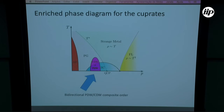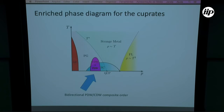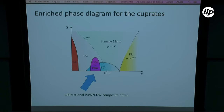The phase diagram of the cuprates became enriched — it gained a new phase. Besides the charge order phase, we now have a pair density wave. This is the so-called bi-directional pair density wave / charge density wave composite order.